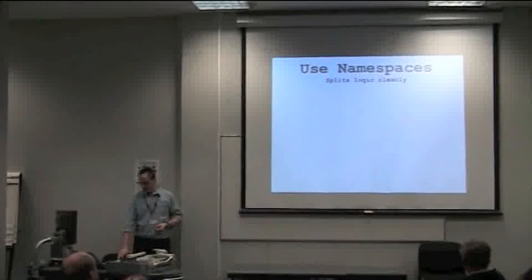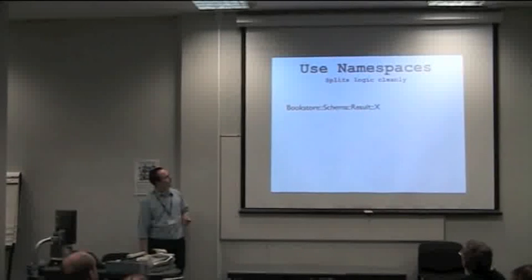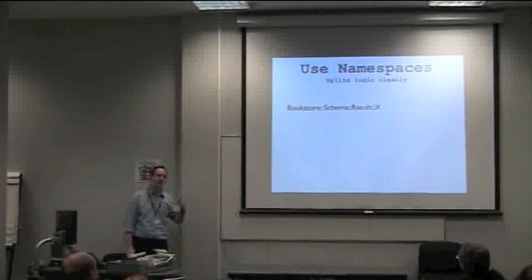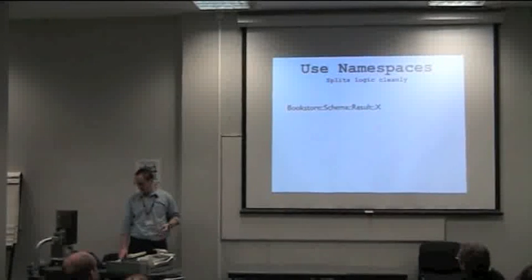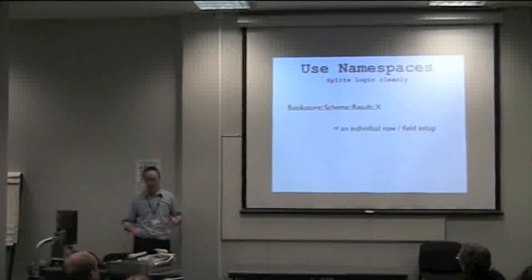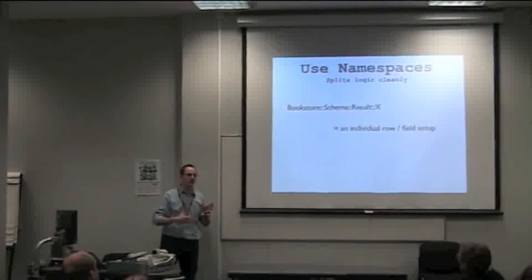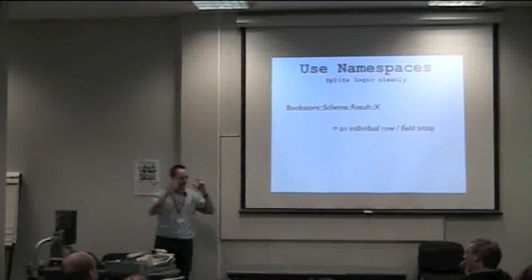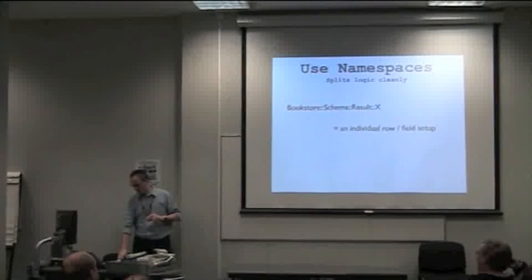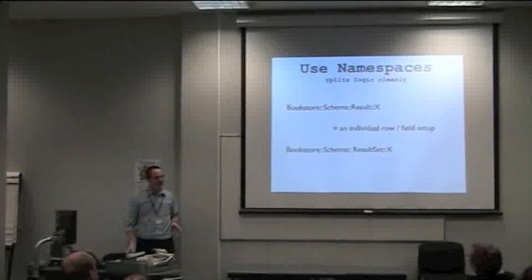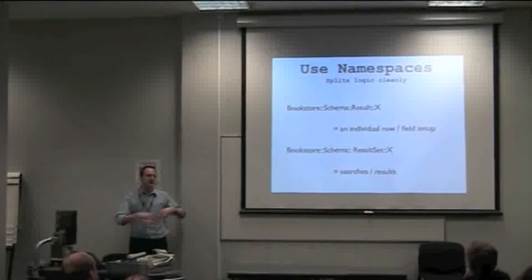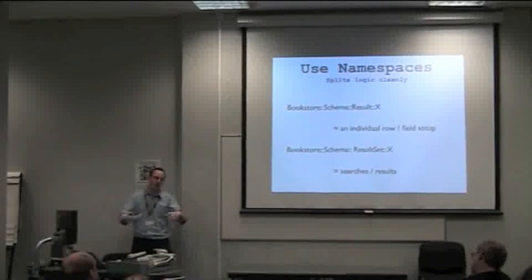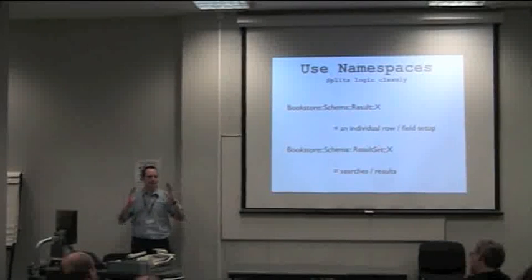So, the namespace splits the logic very cleanly. We end up with bookstore-schema-result-x. So whether x is the books or the authors. And that's really an individual row and the other information. So that's the row itself, the connection information. And then result set x, which is about searches and results. DBIC class does allow you to switch all of this into one file, but splitting out keeps you sane.